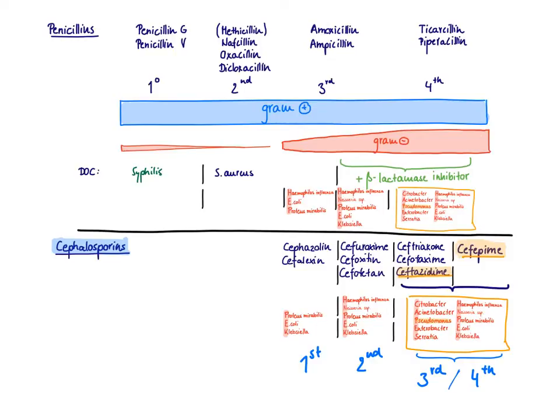The second generation cephalosporin is very similar, almost identical with the third generation penicillins if you give them together with a beta-lactamase inhibitor. Again, you're going to cover HENPAK for the gram-negatives: Haemophilus influenzae, Neisseria species, Proteus mirabilis, E. coli, and Klebsiella.